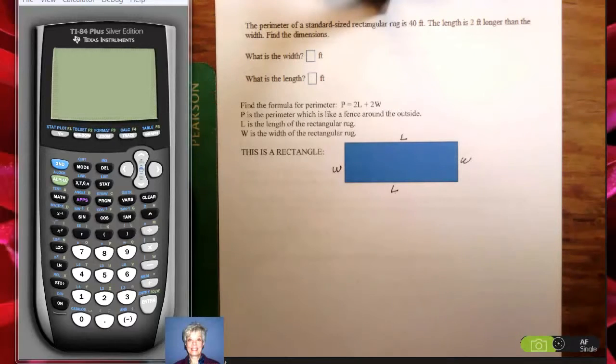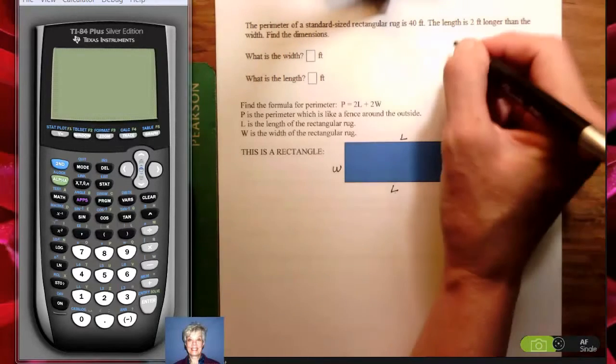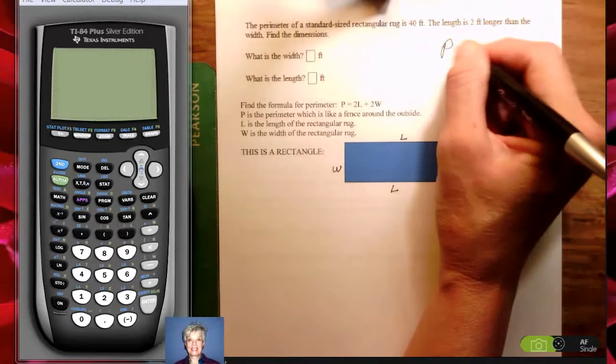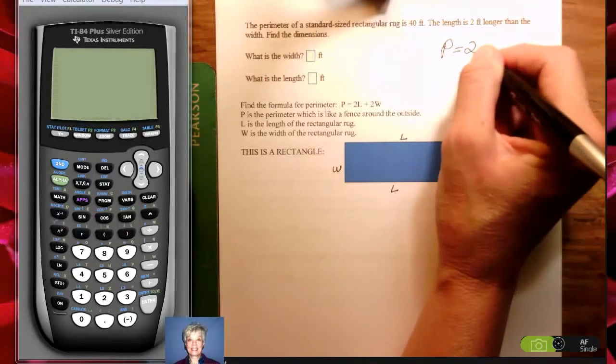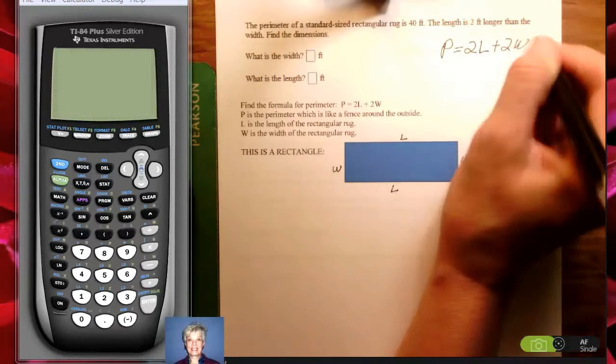So now, let's go back and look at what we're being told. We have to find length, we have to find width, because it's a perimeter problem. Notice that if you write the formula, let's write it up here. P equals 2L plus 2W.